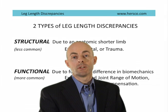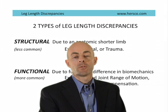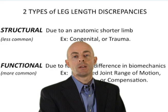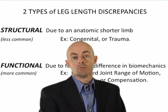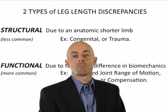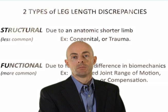There are two categories of leg length discrepancies. The first is structural — this is where the limb is actually physically shorter. It can be due to congenital deformities, trauma, or even post-surgical. The second type is functional, which is usually due to a neuromuscular imbalance or a compensation.